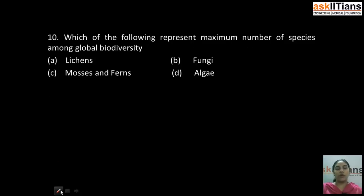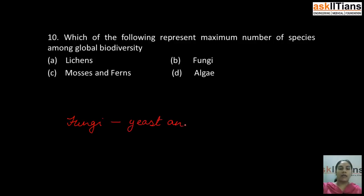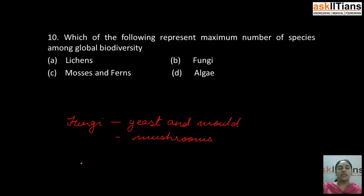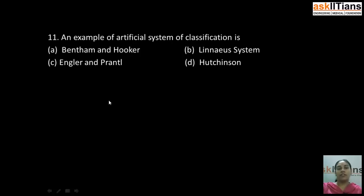Our next question is: which of the following represents the maximum number of species among global biodiversity? A) Lichens, B) Fungi, C) Mosses and ferns, D) Algae. The correct answer is B: Fungi. Fungi represent the maximum number of species among global biodiversity. Fungi include microorganisms like yeast and molds, and also contains multicellular forms like mushrooms. The major characteristic of kingdom Fungi is that it has a cell wall of chitin.